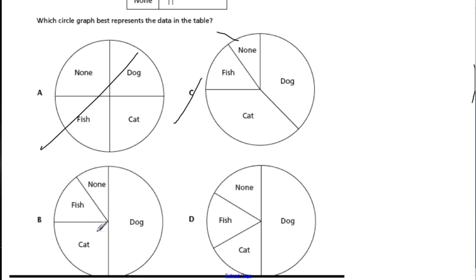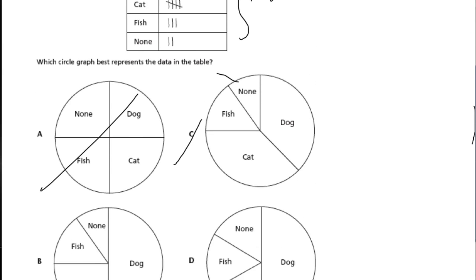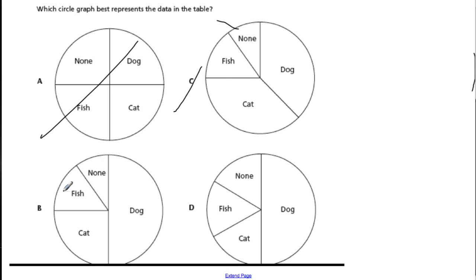This one looks like the best bet because there are half as many cats as dogs. Let's check fish and none — this is an estimate. Fish should be a little bit more than none: 3 fish and 2 none. That makes sense. This piece is 5, which is half the size of the dog piece. So this is our answer.